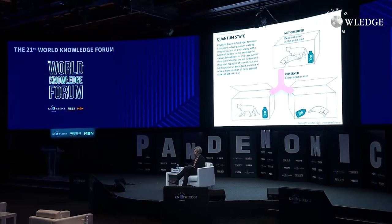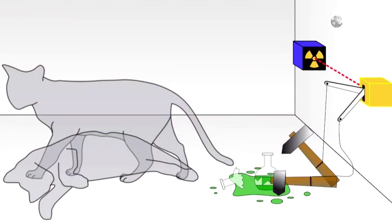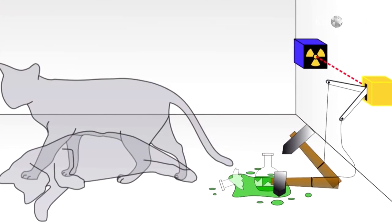Quantum superposition is a state in which a quantum system — such as an atom, a photon, or in this case a cat — can be in two places at the same time, or in two different states at the same time. The prevailing theory, called the Copenhagen interpretation, says that a quantum system remains in superposition until it interacts with or is observed by the external world. When this happens, the superposition collapses into one or another of the possible definite states — dead or alive.